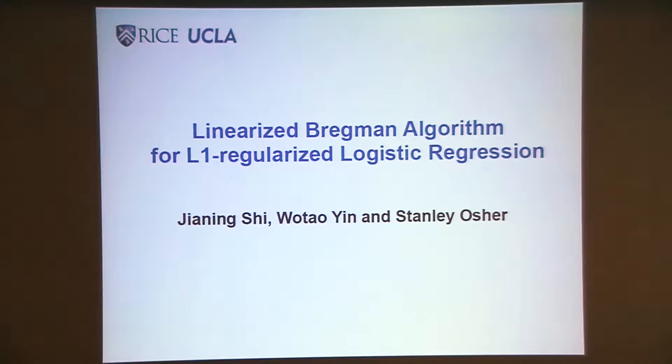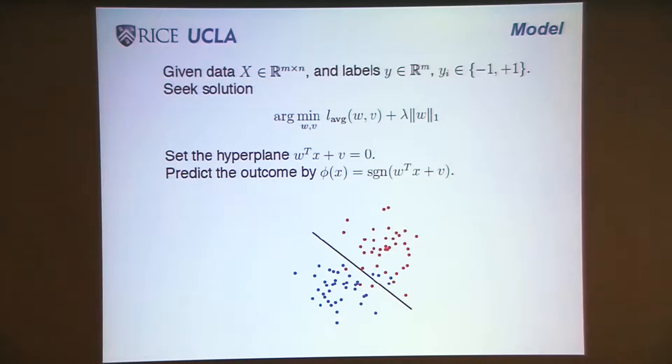So here's the problem. Given data x, which belongs to R^(m×n), labels in R^m which are either minus 1 or plus 1, you want to minimize this function and regularize by L1. The idea is a hyperplane W transpose x plus v equals zero, and then you can predict the outcome by getting the sign.